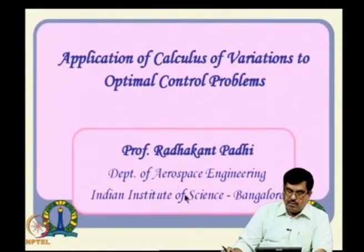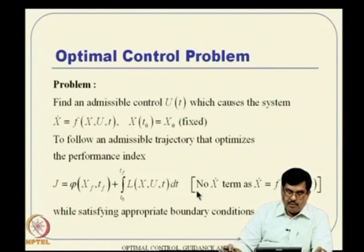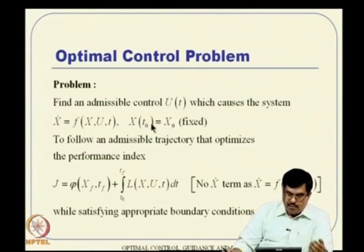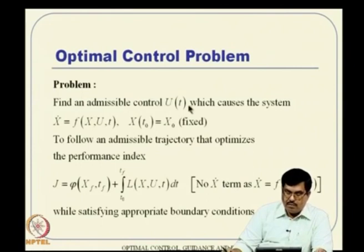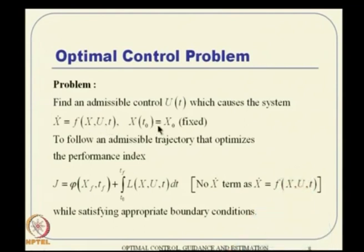Now, how do we use these concepts for optimal control problems? The formal definition of optimal control — which we also discussed briefly at the end of the last class — is: find an admissible control u(t) which causes the system x-dot = f(x, u, t), with fixed initial conditions, to follow an admissible trajectory that optimizes the performance index while satisfying appropriate boundary conditions.